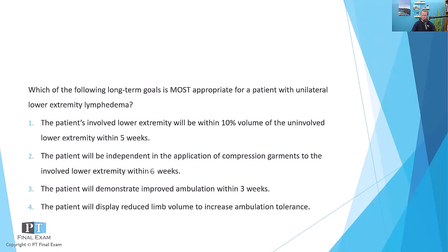Which of the following long-term goals is most appropriate for a patient with unilateral lower extremity lymphedema? Option one: the patient's involved lower extremity will be within 10% volume of the uninvolved lower extremity within five weeks. Option two: the patient will be independent in the application of compression garments to the involved lower extremity within six weeks. Option three: the patient will demonstrate improved ambulation within three weeks. Option four: the patient will display reduced limb volume to increase ambulation tolerance.